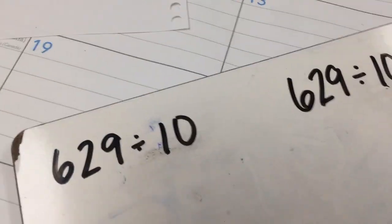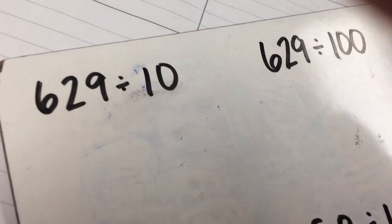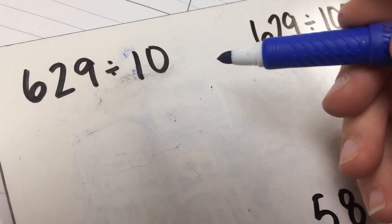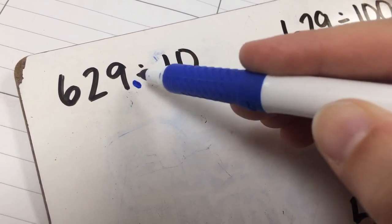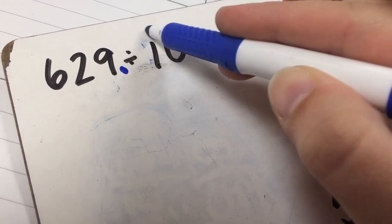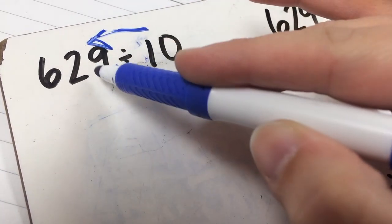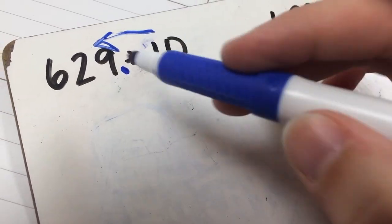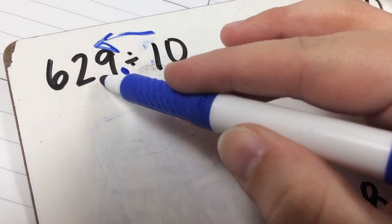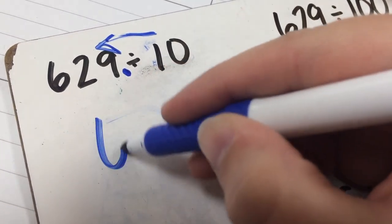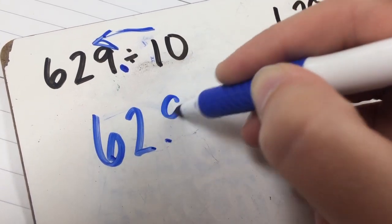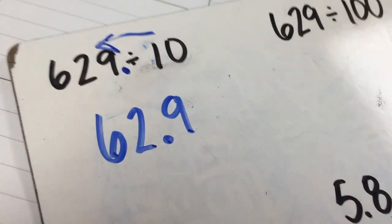Now whenever you divide, it is the same thing, only opposite. So I have 629. There's always an unspoken decimal point in a whole number — it's right there at the end. Whenever we divide, we're going to go the opposite direction — we need to make our number smaller. There's 1 zero in 10, so we're going to jump our decimal point to the left one place. Our new number is 62.9, or 62 and 9 tenths.